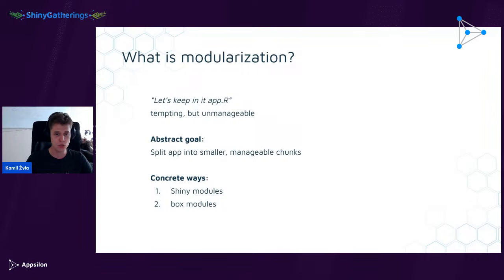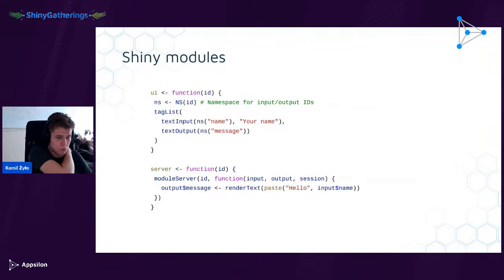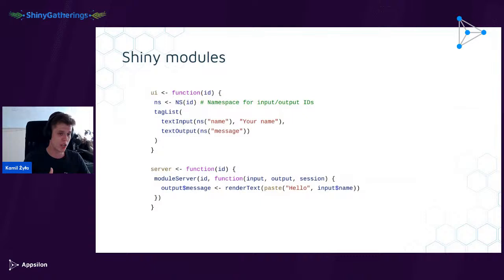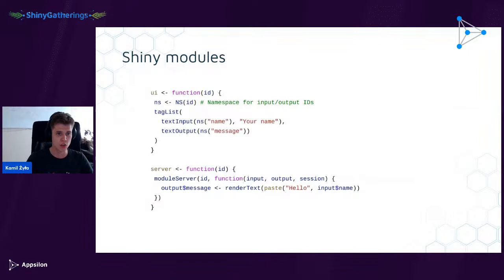Working on a single file in a team is nearly impossible — you really need to split it into smaller, more manageable chunks. This is the abstract goal of modularization: take your application and split it into smaller chunks that can be worked on separately, have clearly defined interfaces, and make the whole structure more understandable. Rhino approaches this through two concrete ways: Shiny modules and Box modules.